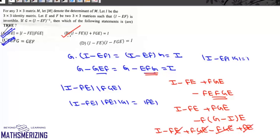Now if we look at this option D, it is I minus FE minus FGE plus FEFGE. Now again, we write EFG as G minus I, so it'll be I minus FE minus FGE.